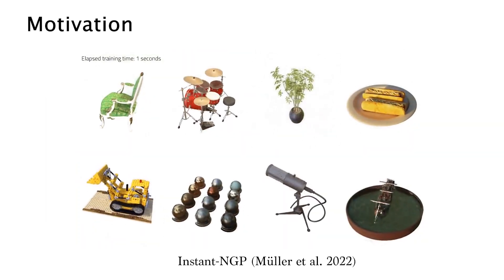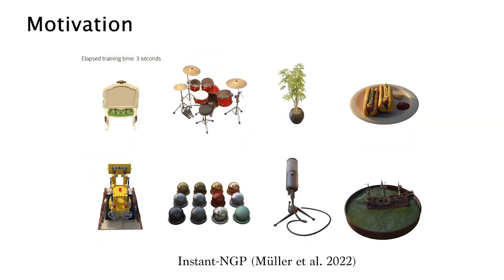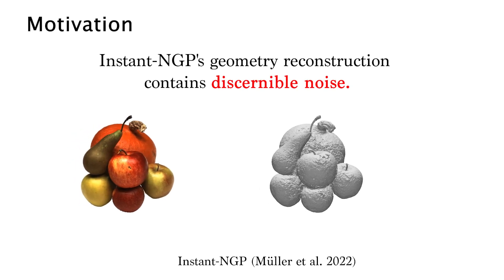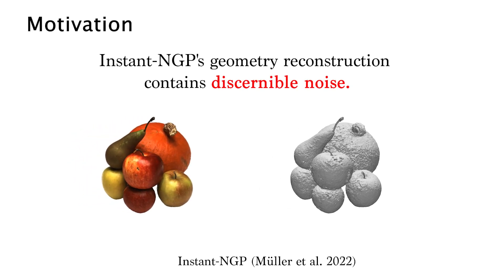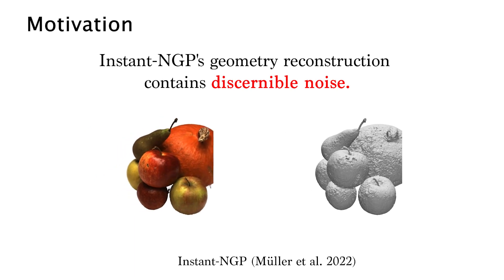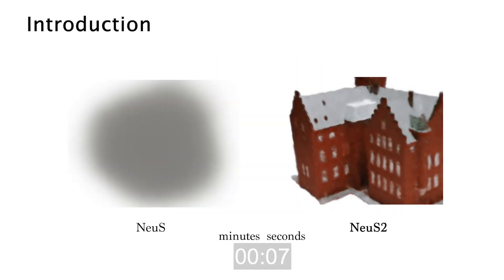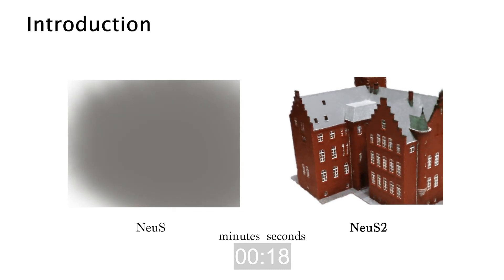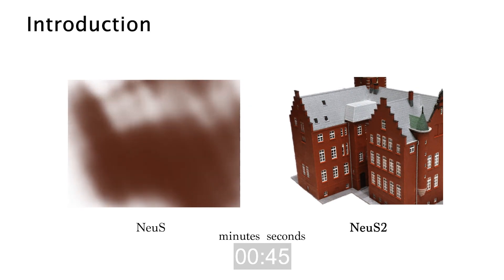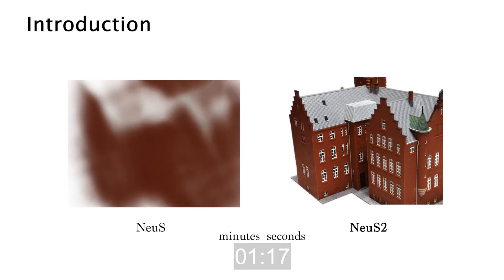Another work, Instant NGP, has explored the training acceleration of neural radiance fields, but the extracted geometry from the learned density fields contains discernible noise. Therefore, we propose NuS2, a new method for fast training of highly detailed neural implicit surfaces from multi-view 2D images. We achieve two orders of magnitude improvement in acceleration without compromising reconstruction quality.